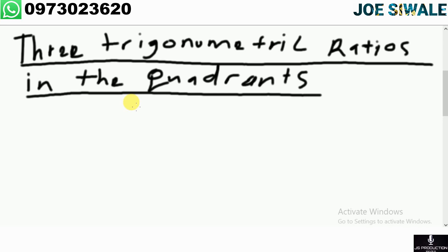If we come to the third quadrant, tan is positive, which means sine and cosine are negative. Then in the fourth quadrant, cosine is positive, which means sine and tan are negative.